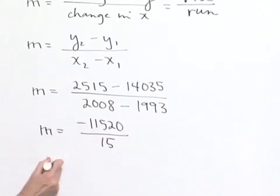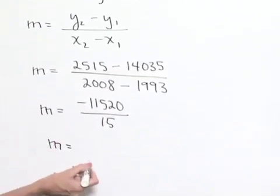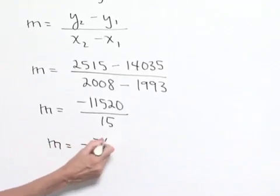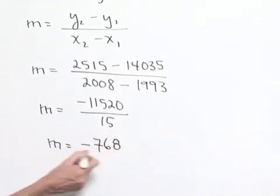And now dividing gives us our M value, which is going to equal a negative 768.